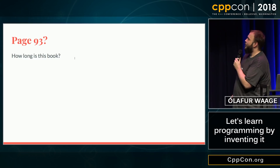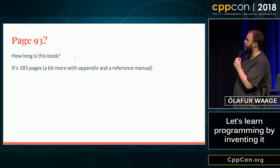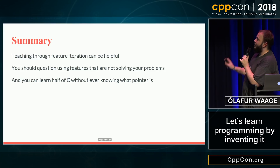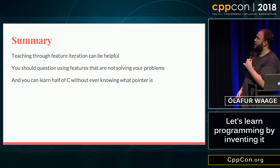This book is 185 pages — a little more with the appendix and reference manual — so pointers appear 50.27% through the book. Summary: teaching something through feature iteration can be helpful; you should question using features if they're not solving your problems; and you can learn half of C without even knowing what a pointer is. Thank you.